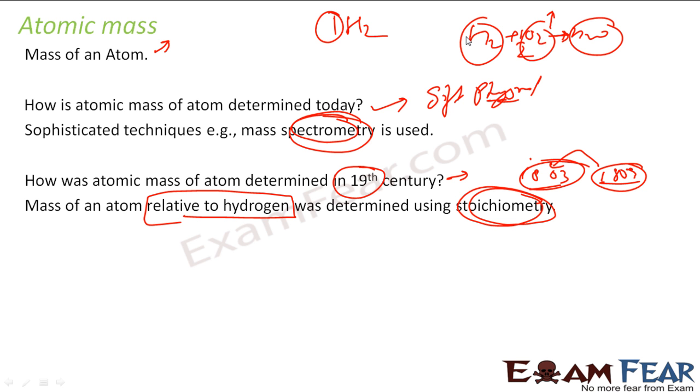I think we will take few examples where we will be given some reactions and we have to find the atomic mass. We will do that. Just understand that in 19th century, that is 1800 era, 1803, 1809, 1850, when mass spectrometry, this physics instrument was not there, the chemist used to use the stoichiometry to find atomic mass.